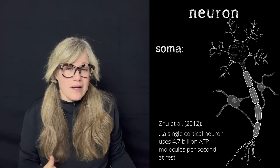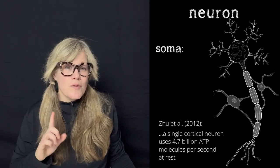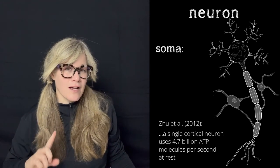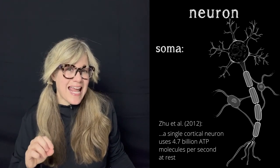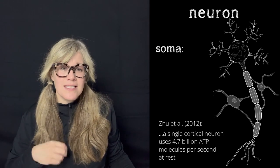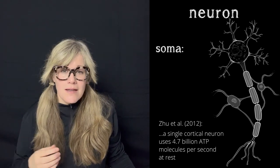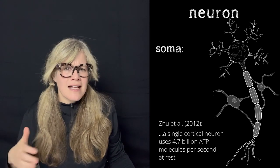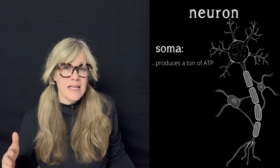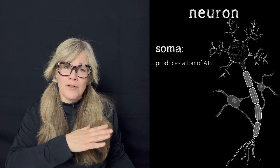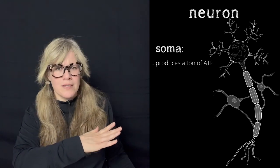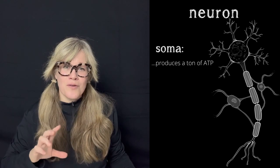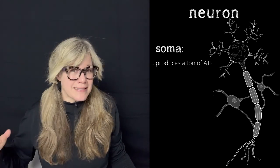So what's going on in the cell body that requires so much energy? If you remember from the last episode, one of the jobs mitochondria are tasked with is making ATP, which is the fuel cells need to do their business. So in a kind of cellular version of an internal return, the cell needs to make a ton of ATP to not only provide enough fuel to burn 4.7 billion molecules of it per neuron per second, it also has to make enough fuel to keep making and metabolizing ATP.